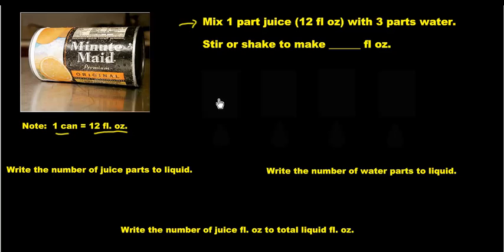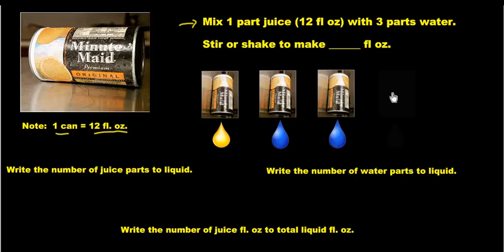This is what it looks like. You're going to take 1 part juice. That's the full can, 1 part. And we're going to mix it then with 3 parts of water. Oh, that sounds so refreshing. And we also know that 1 can is 12 ounces.